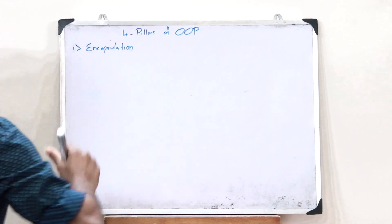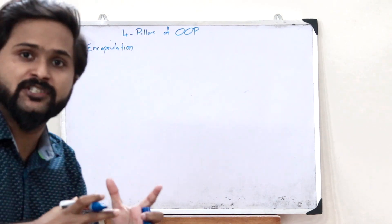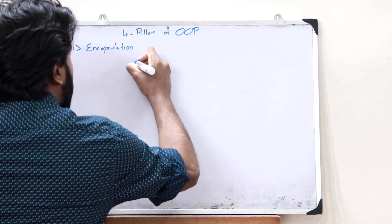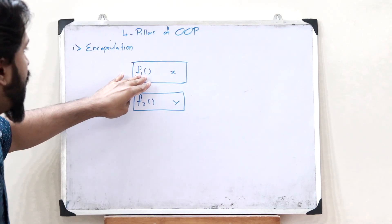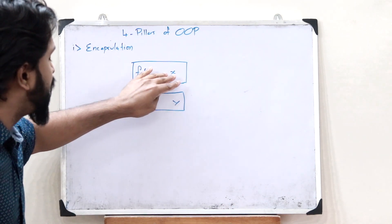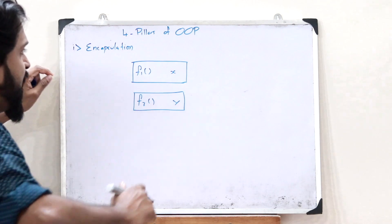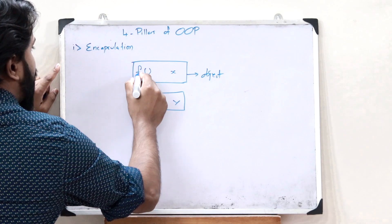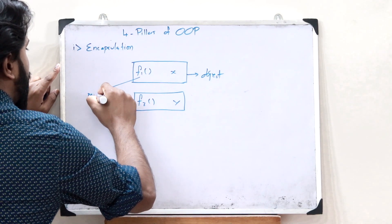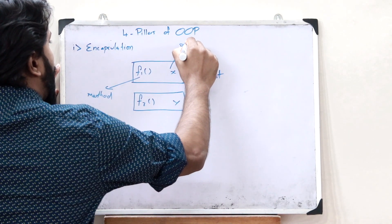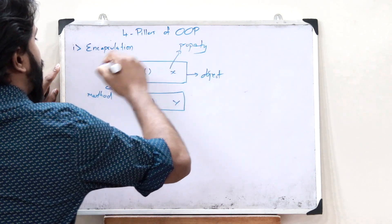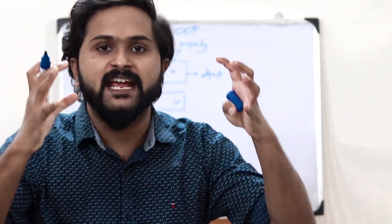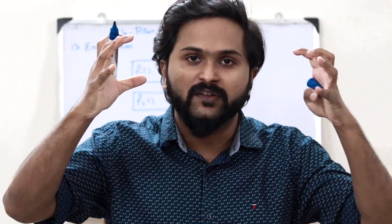Encapsulation is a process by which similar functions and similar variables are grouped into one single entity. Related functions and variables are grouped into a single entity referred to as an object. This is what you refer to as a method, and this variable is called the property of this particular object. This binding of data and functions into a single unit is what you refer to as encapsulation.